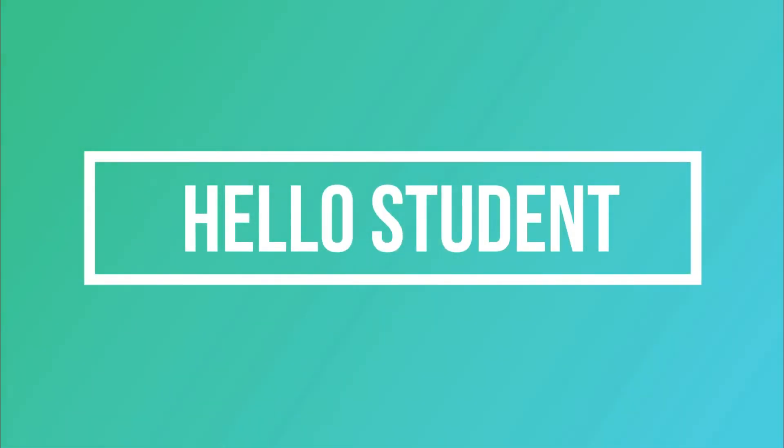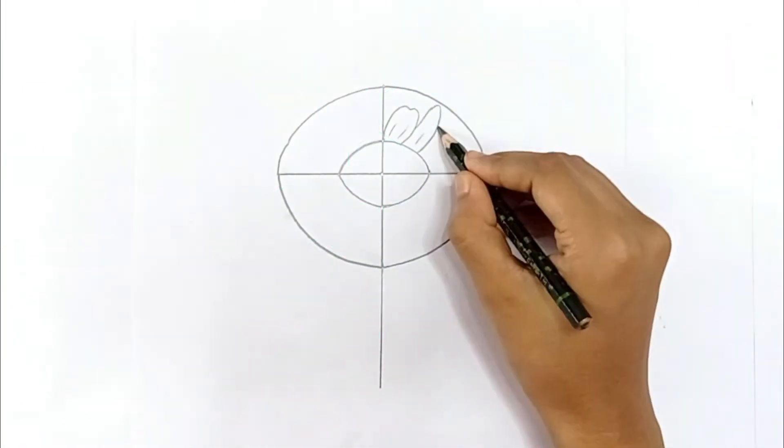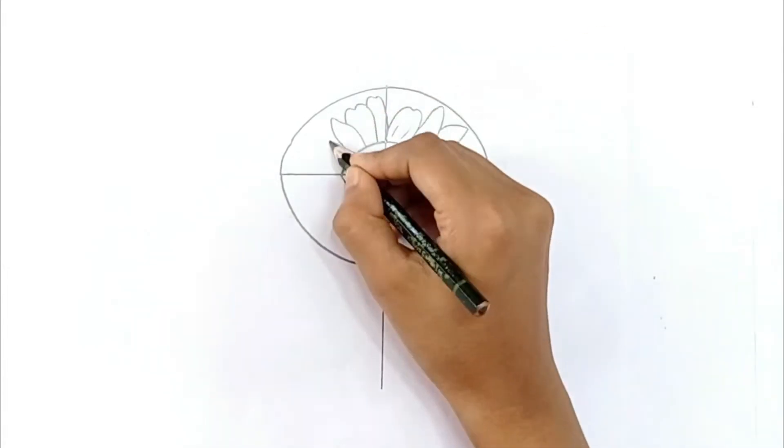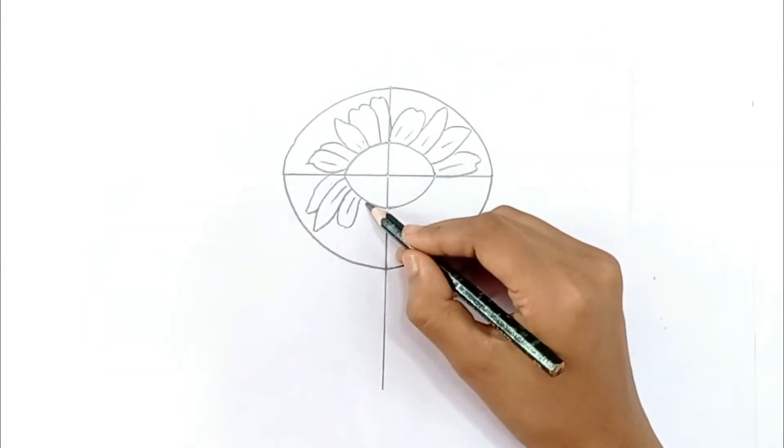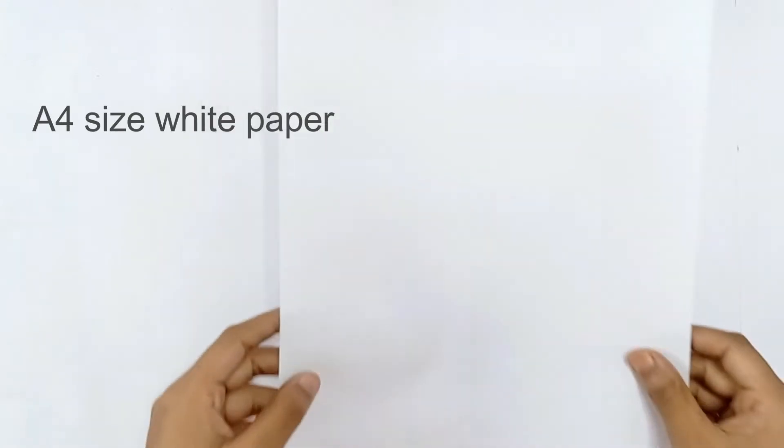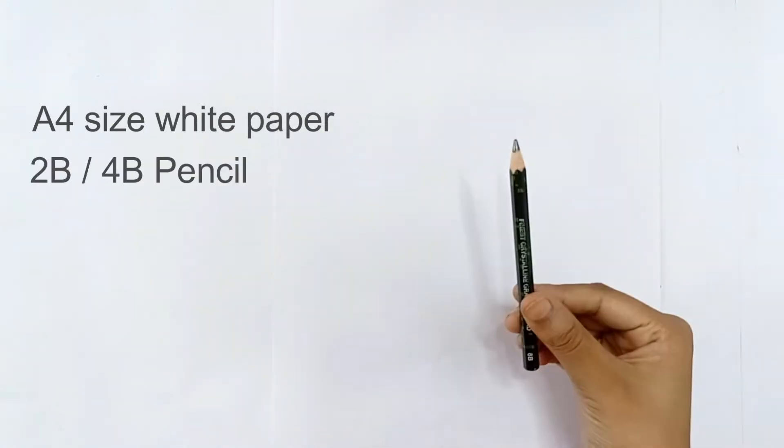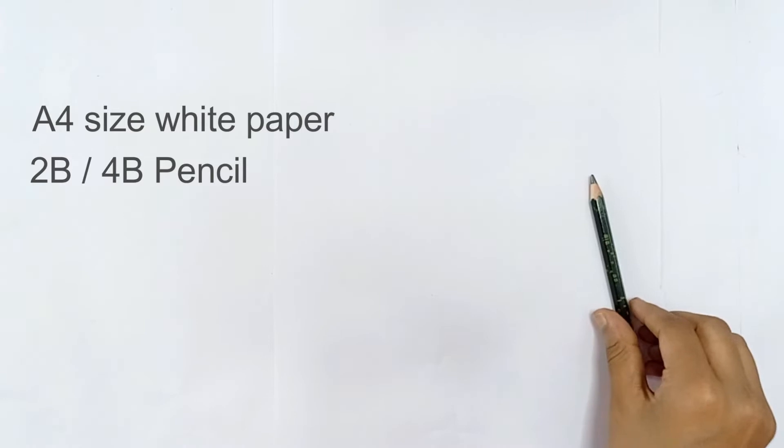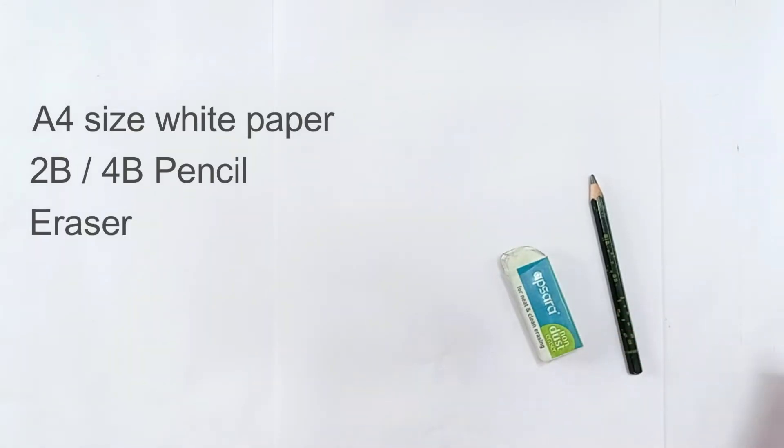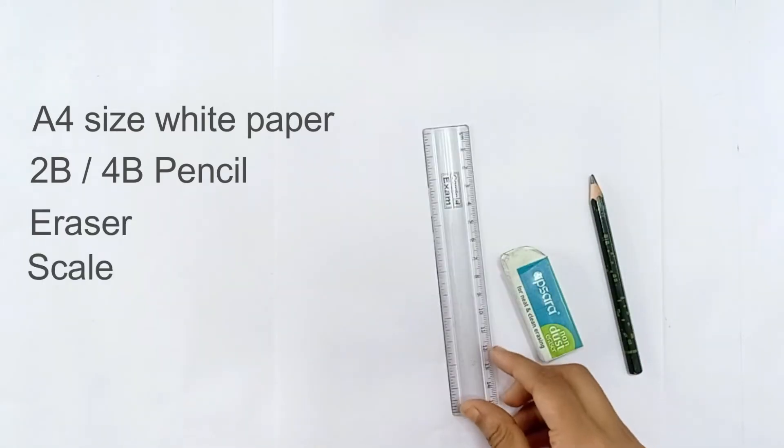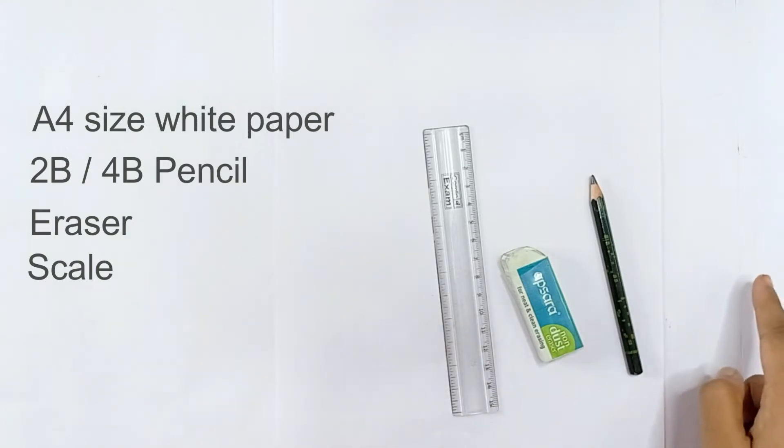Hello students, in today's drawing lesson we will learn how to draw a sunflower in a very simple way. We will draw step by step. To draw the sunflower we need an A4 size white paper, 2B or 4B pencil, eraser, and a scale.